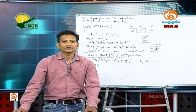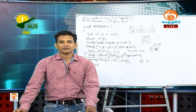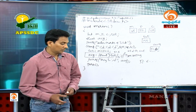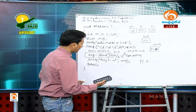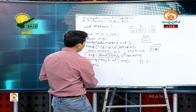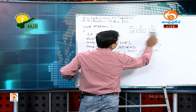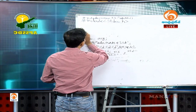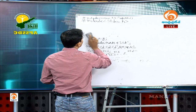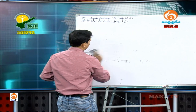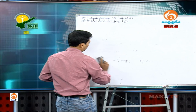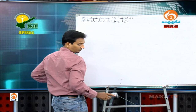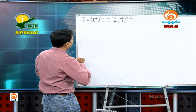We have completed type casting. Next we go for preprocessor directives.